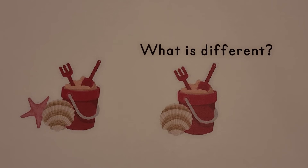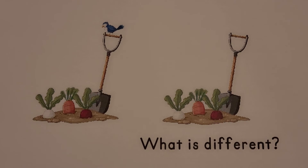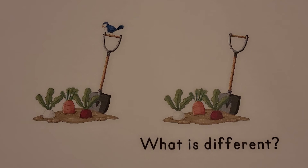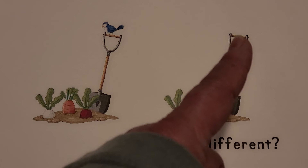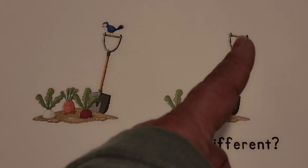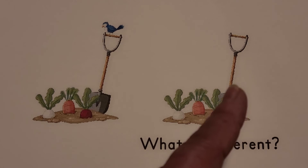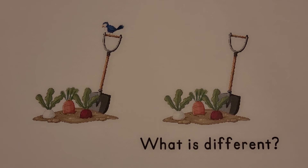What is different about this picture than this picture? If you said this picture is missing the little blue bird on the top of the shovel, you're correct. There's no bird on this shovel — this shovel has a bird, this shovel does not. The missing bird is what is different.